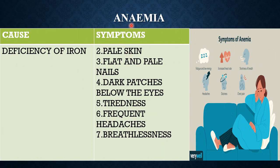The next deficiency disease is anemia. Anemia is caused due to the deficiency — or lack — of iron in one's diet. The symptoms of anemia include pale skin, meaning an unusual lightness of the skin color compared to normal; flat and pale nails; dark patches below the eyes; tiredness; frequent headaches; and breathlessness, that is, difficulty in breathing.